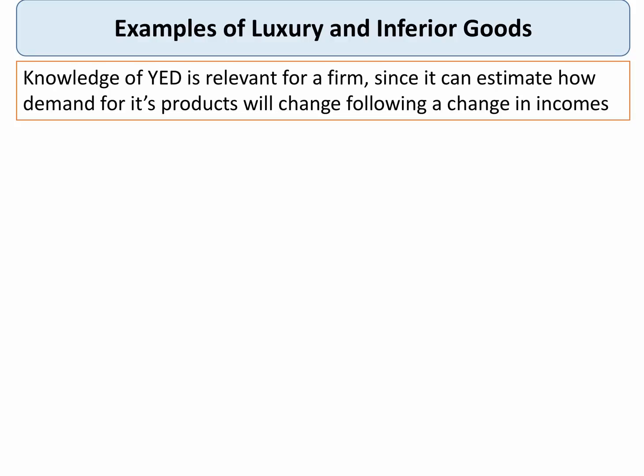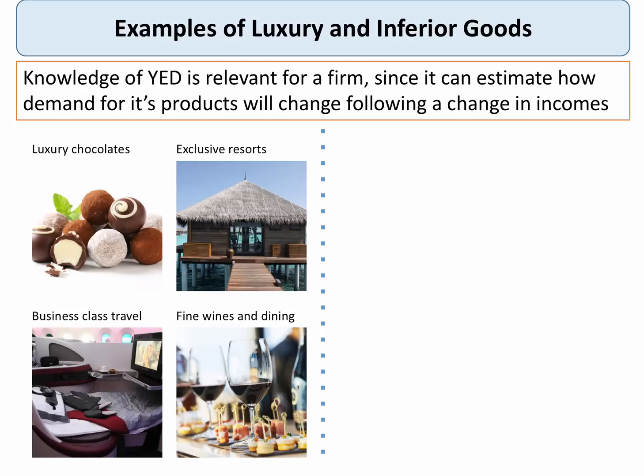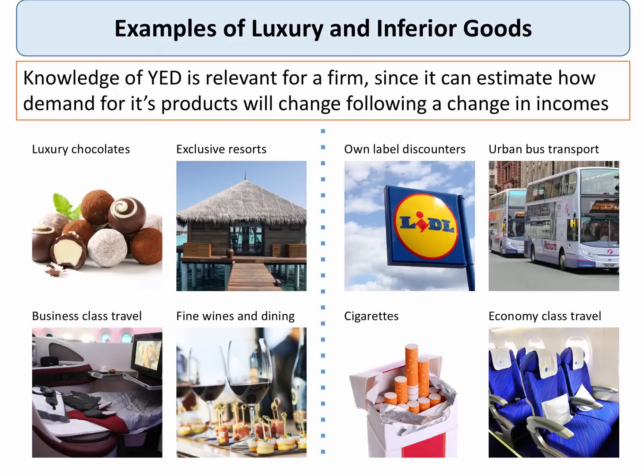Just briefly, a few examples of typical luxury and inferior goods. Luxuries have an income elasticity of demand of greater than plus one and are typically associated with fine or expensive items — for example, business class travel compared to economy class travel. Inferior goods include very basic staple food products, mass transport such as urban bus services, and economy travel compared to standard business class travel.